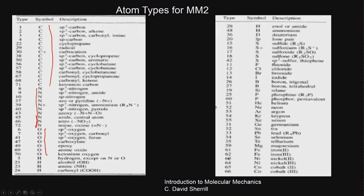So calculations for all these atoms can be done properly. But if you have some other metal that is not in the list, MM2 cannot handle it, and you may have to go for some other force field. For example, platinum may not be in this list. Each of these force fields will have different sets of atom types and different parameter values, so it is always good to use only one force field for all your calculations.